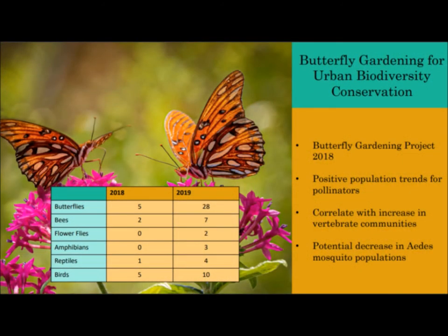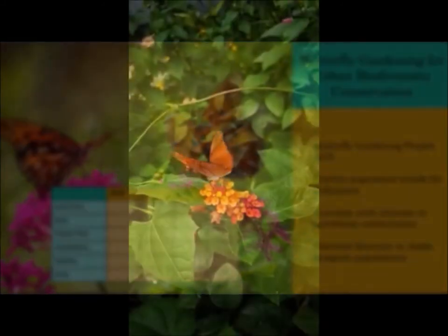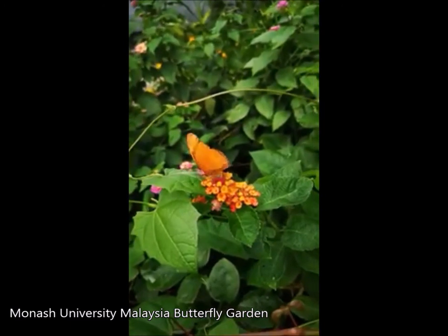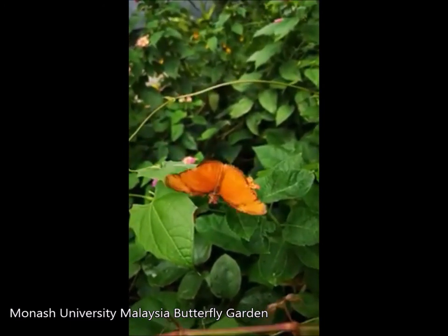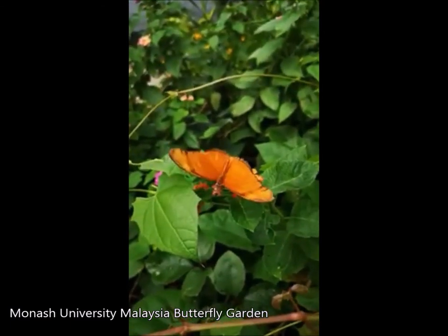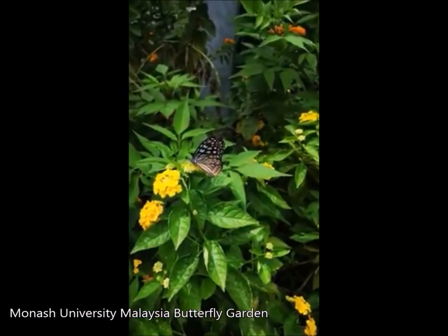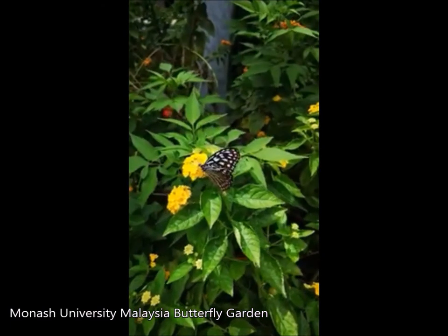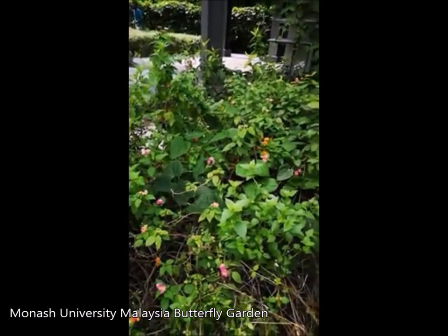In early 2018, our team ran a short pilot study investigating the impact of butterfly gardening on improving the biodiversity of an urban plot. We adopted a community assembly approach by first repopulating with a range of plants selected by native butterflies as hosts. In time, the diversity of plants in the plot increased due to natural colonization of other species. As the compiled table here indicates, we witnessed amazing results in just under a year: an increase in the diversity of butterflies and other pollinators, as well as increases in local vertebrate communities including several species of amphibians, reptiles, and small birds. We hypothesized that the uptake of natural predators would have an impact on local mosquito populations, though further studies are still needed.